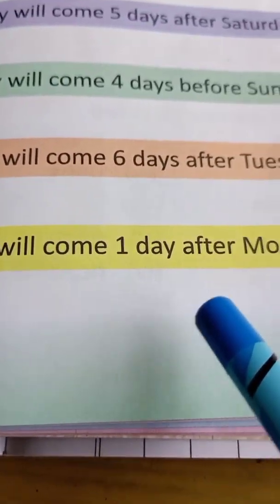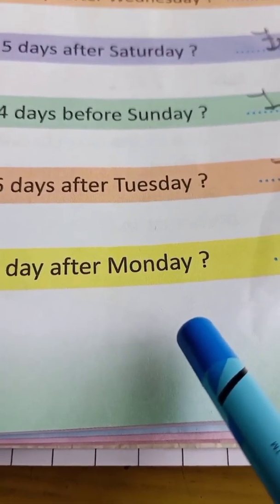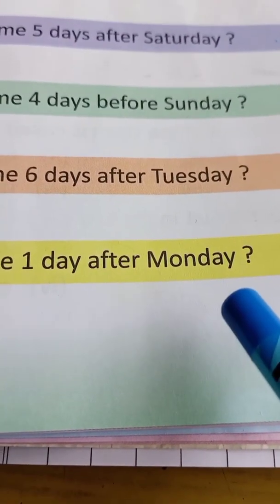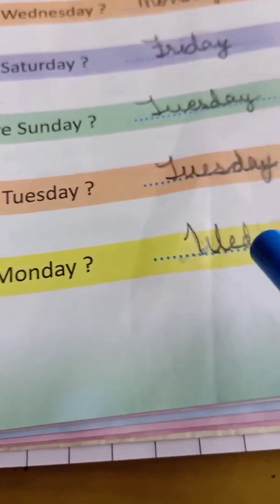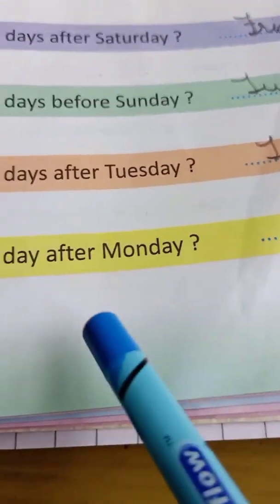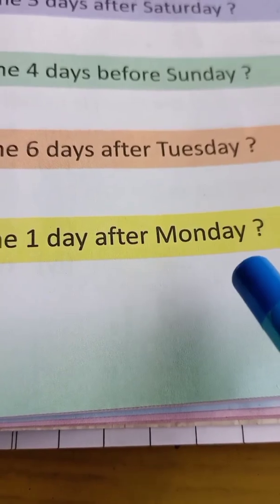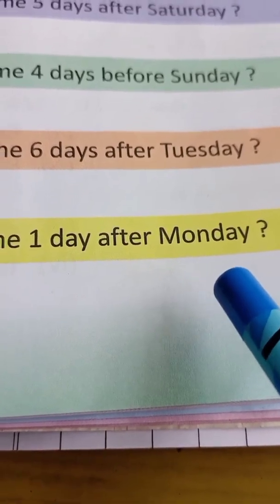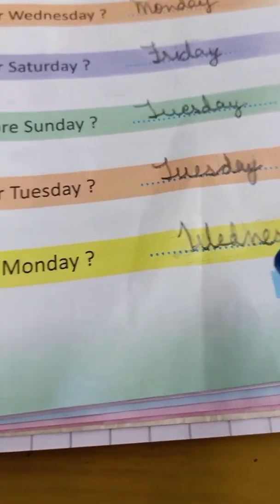What day will come one day after Monday? After Monday count one: Tuesday — so Wednesday will come.